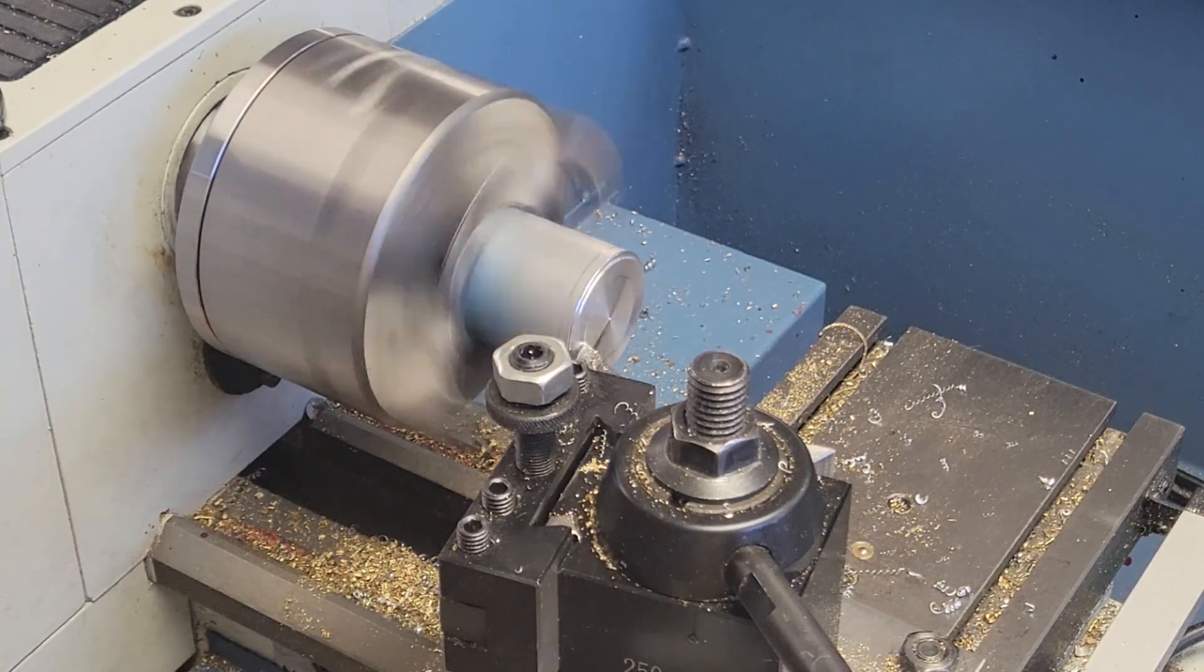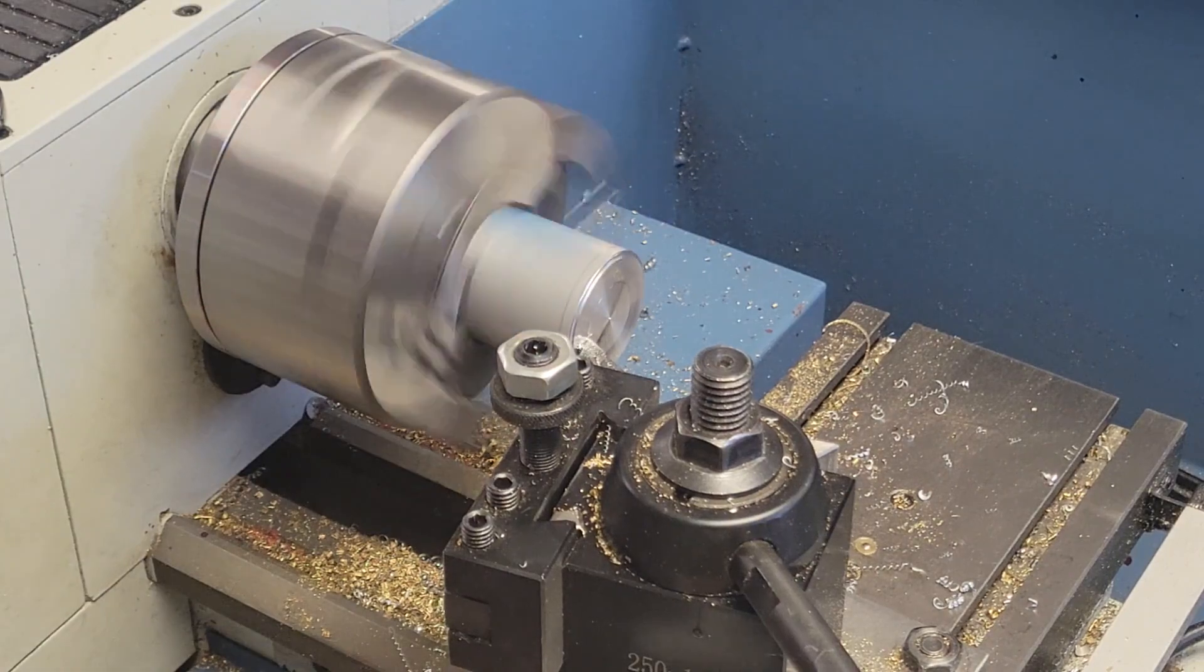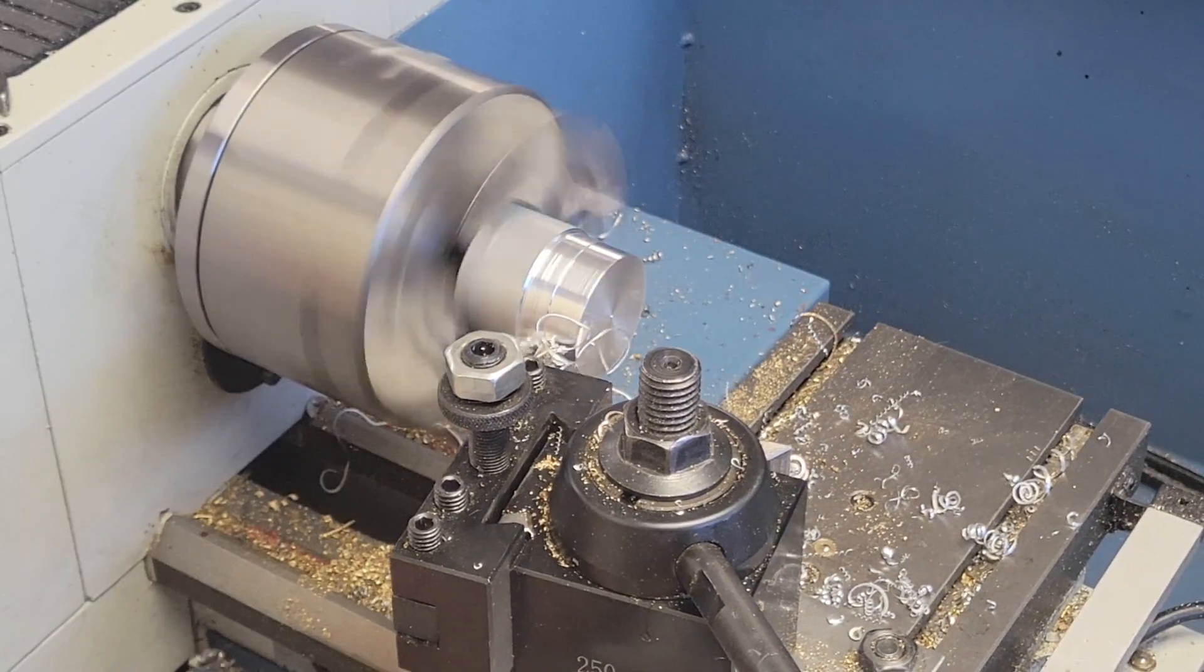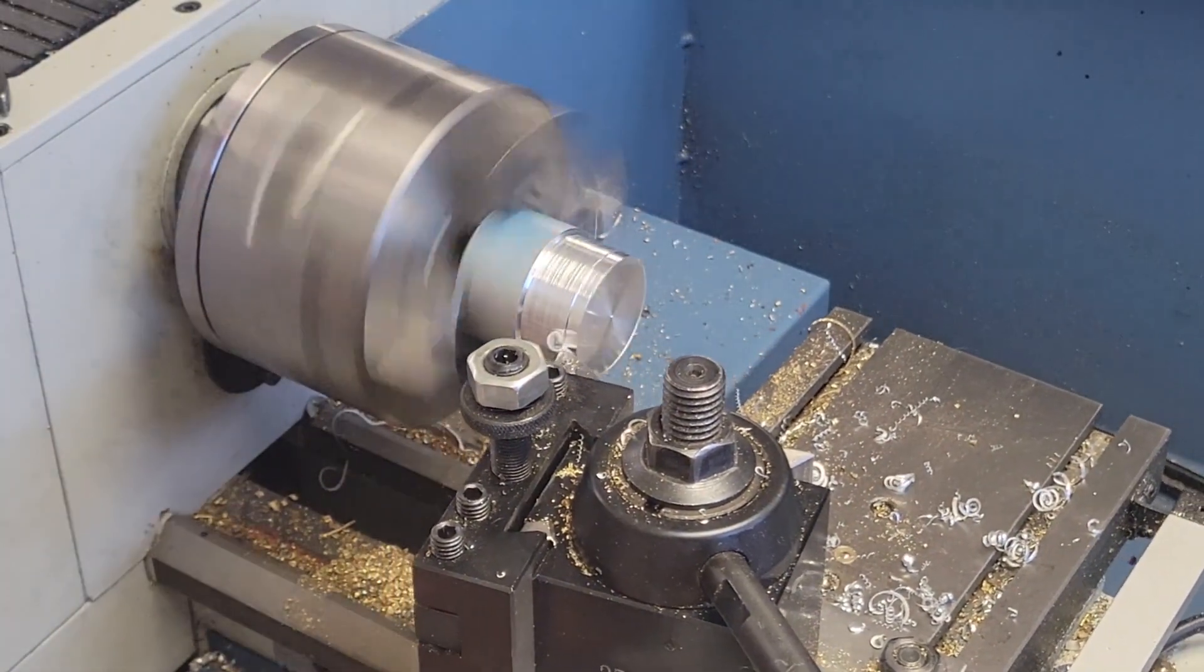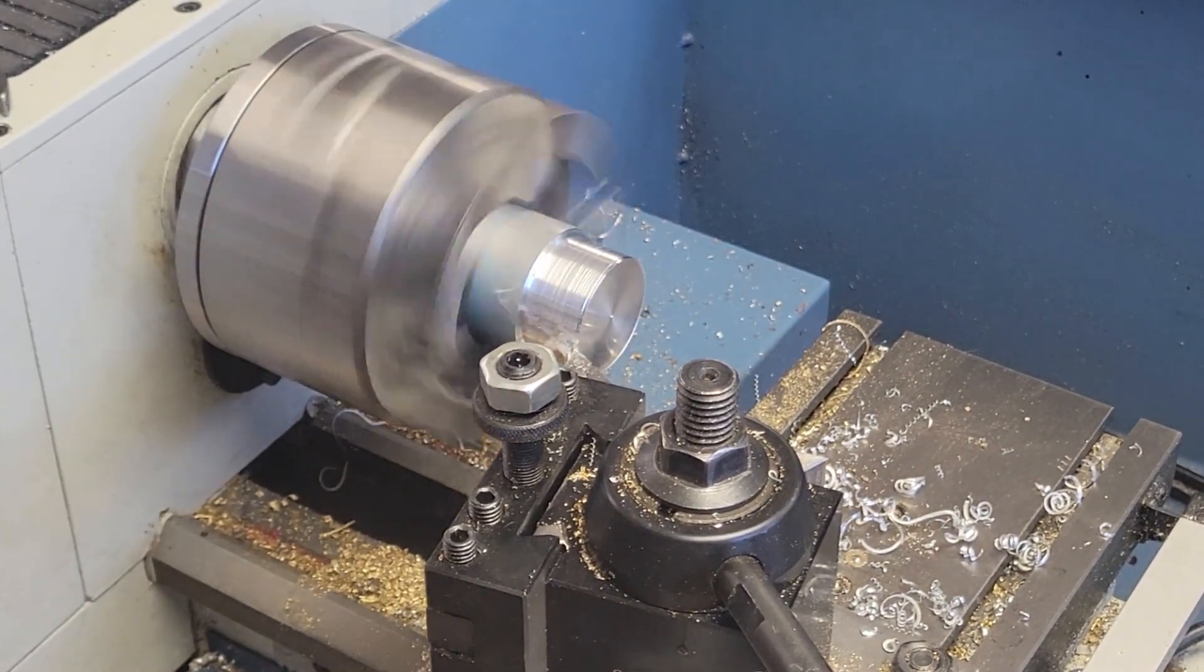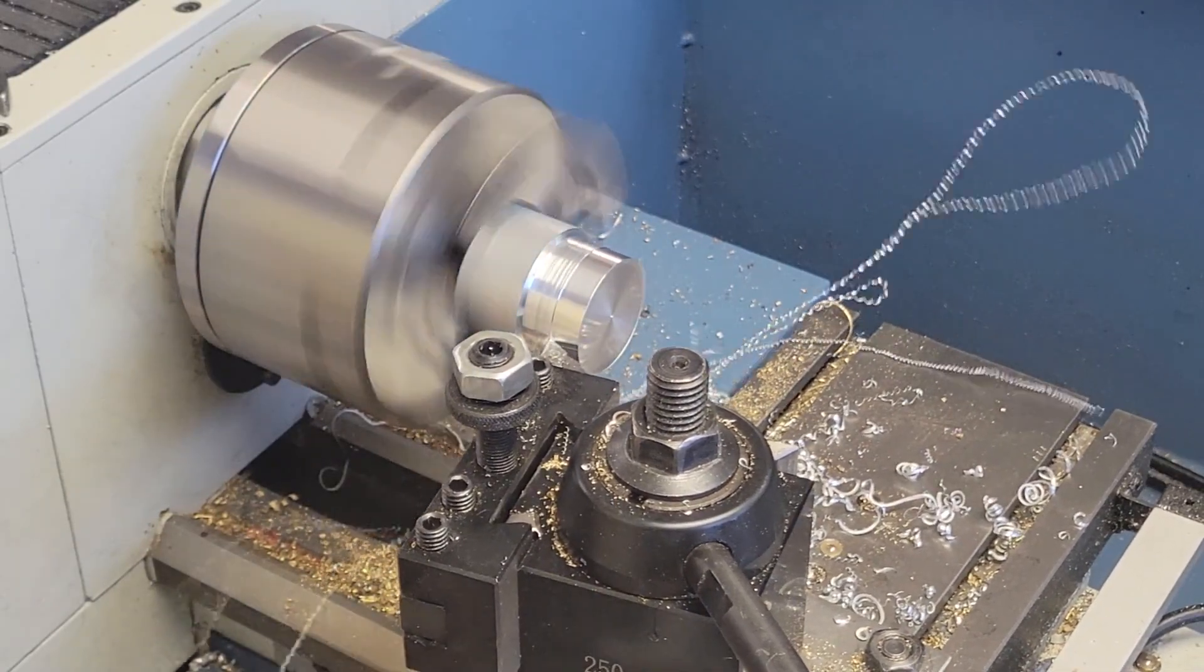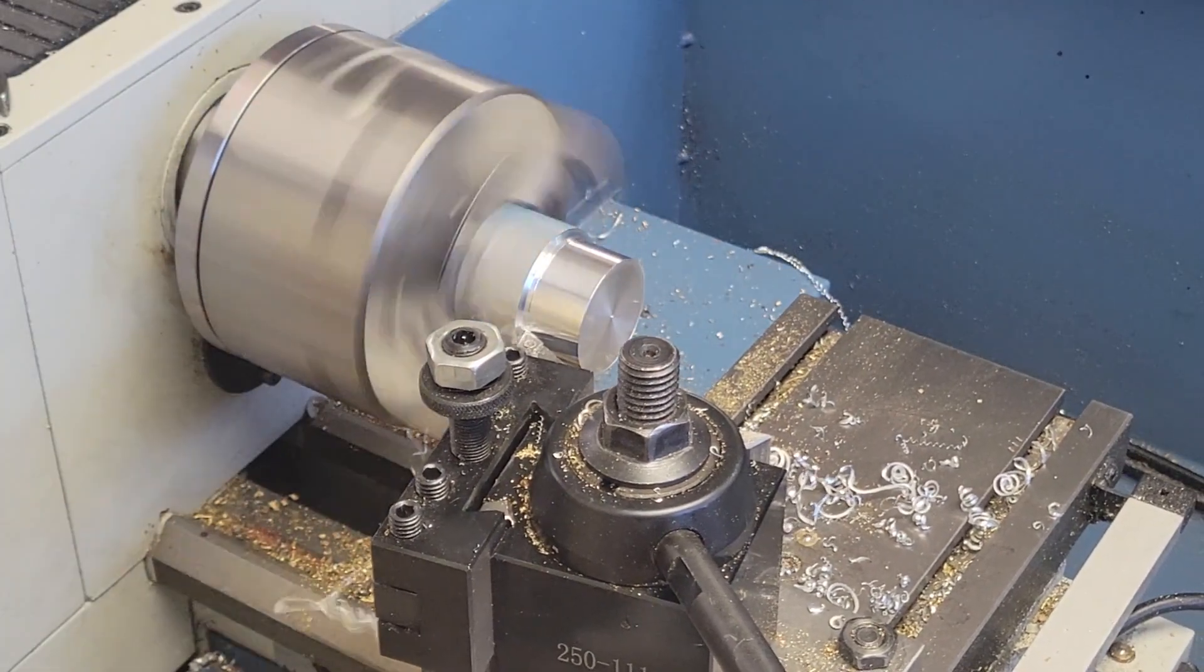We'll start with our facing operation. Then we'll turn down the outside to the largest diameter of the pulley.